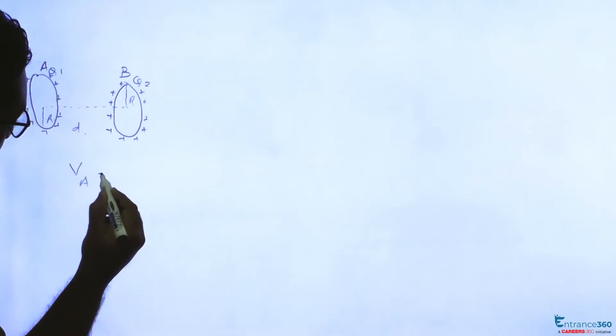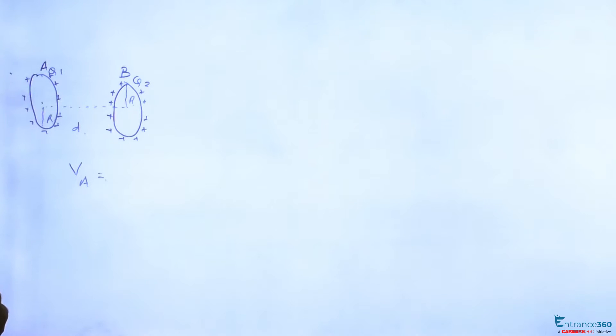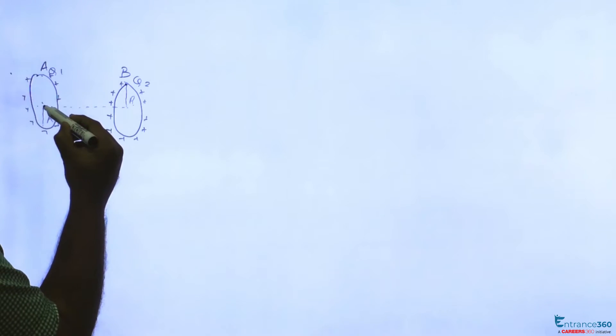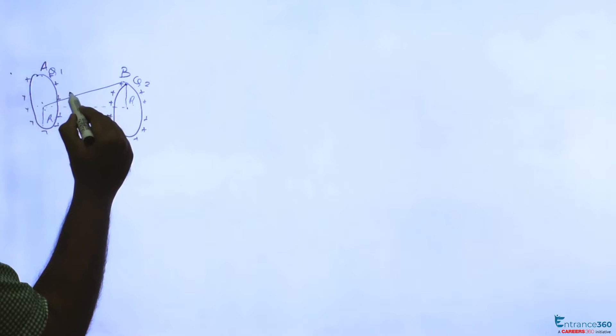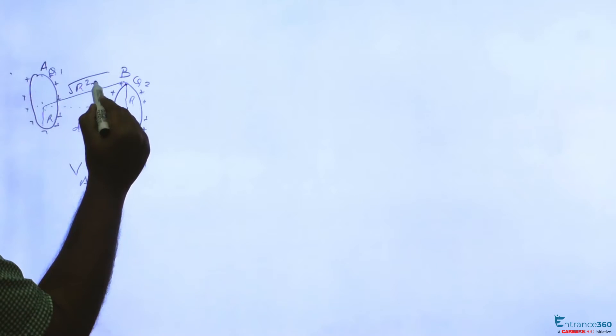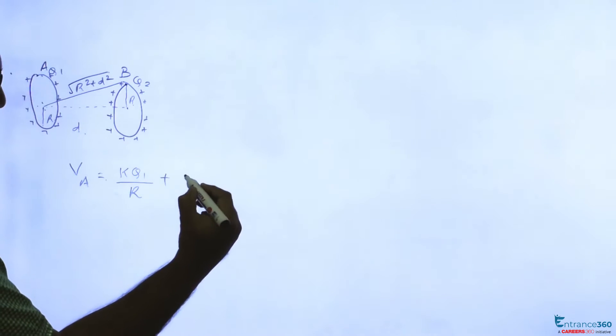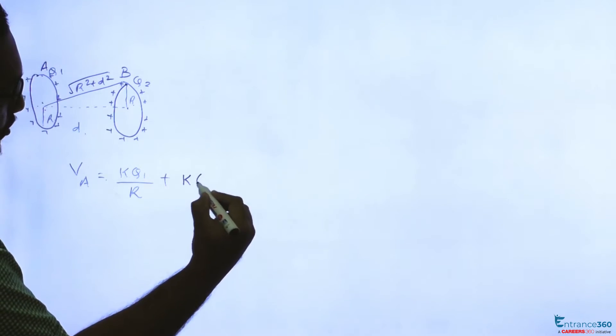For A, total potential will be potential due to A at its center plus potential due to B at A. If radius is R and distance of separation is D, this distance will be root of R square plus D square. So potential at A is K Q1 by R plus potential at A due to B.